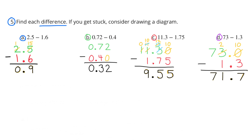C. 11 and 3 tenths minus 1 and 75 hundredths. So 11 and 3 tenths is the same as 11 and 30 hundredths. So 11 and 30 hundredths minus 1 and 75 hundredths equals 9 and 55 hundredths.